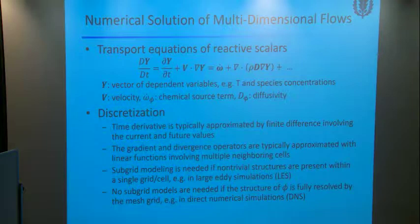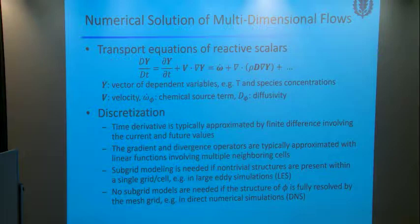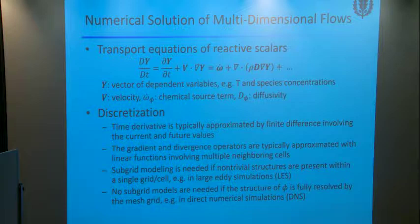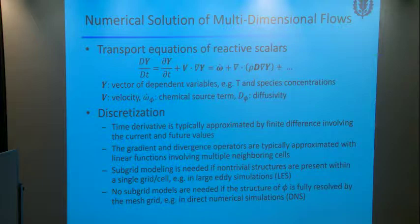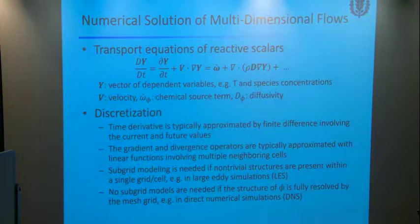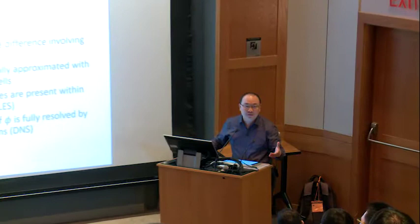Suppose you get a mesh grid already there. The equation will be discretized on different grid points. The partial differential equation becomes a large set of ordinary differential equations — everything is just a function of time. Everything else goes to the right-hand side after discretization. If you want to solve this problem, you find all the variables at all grid points are somewhat coupled. If you want a solution at one grid point, you need to know the neighbors, because they're all coupled together.